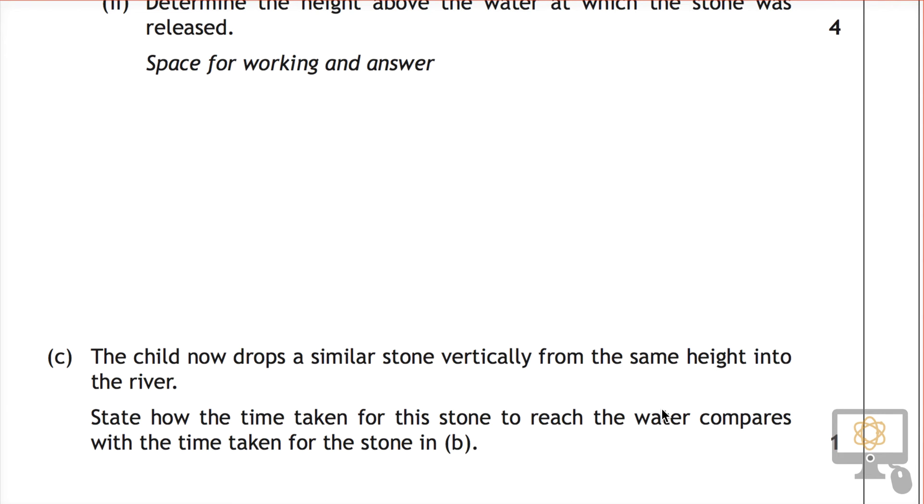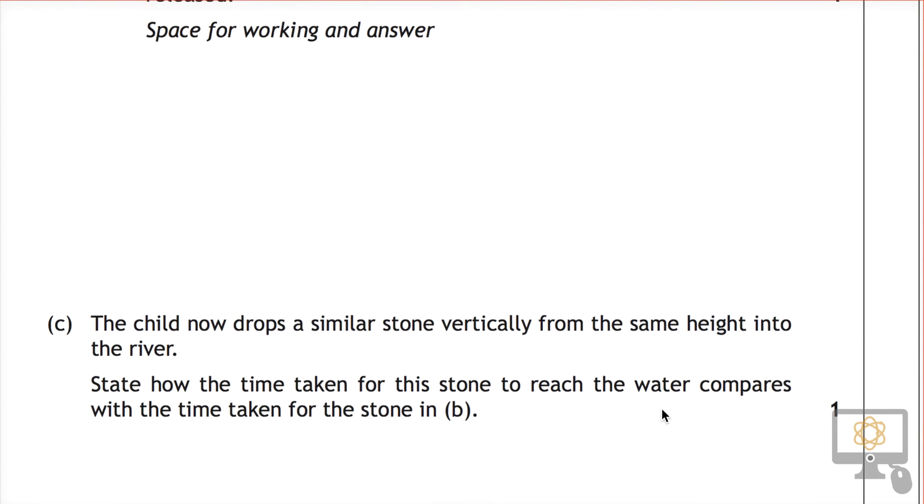Okay, so this question is the last question in question 9 of the 2015 National 5 physics paper and it says the child now drops a similar stone vertically. I'm just going to highlight some things here that I think are important.